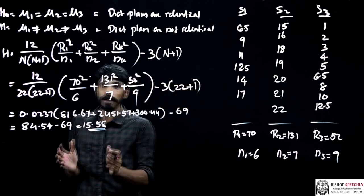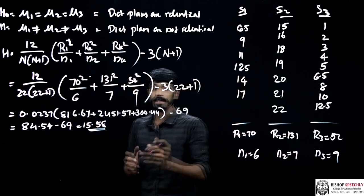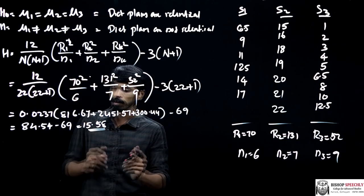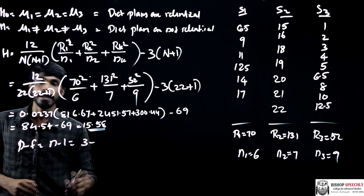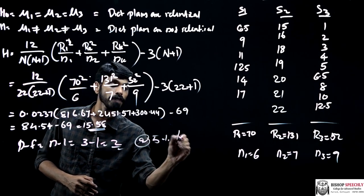For that purpose, we have to take the table value of chi-squared at a degree of freedom of 2. In this case, degree of freedom is calculated by using k minus 1, that is total diet plans was 3 minus 1 equals 2, at 5% level of significance. The critical value of chi-squared for 2 degrees of freedom at 5% level of significance is 5.99.